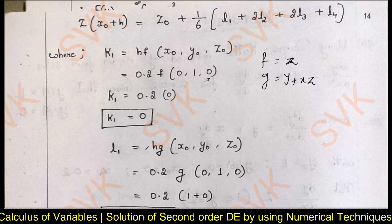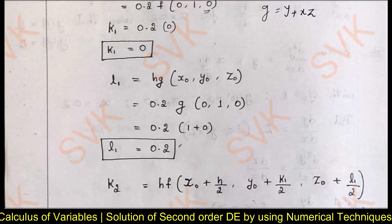Similarly, find l₁ = h·g(x₀, y₀, z₀) with values (0, 1, 0). The function g = y + xz. Substituting y₀ = 1 and x₀ = z₀ = 0, we get 0.2 × (1 + 0) = 0.2. So l₁ = 0.2.